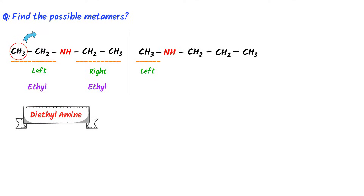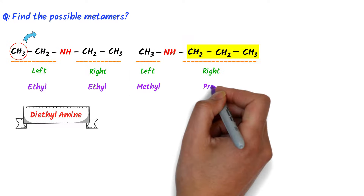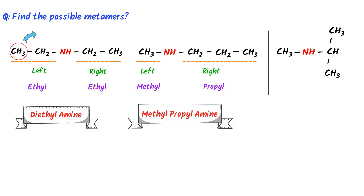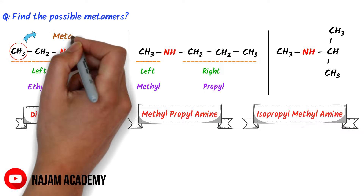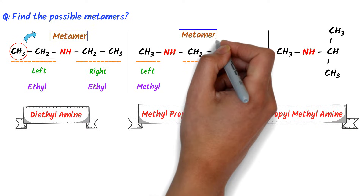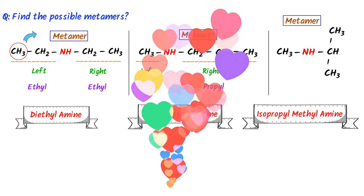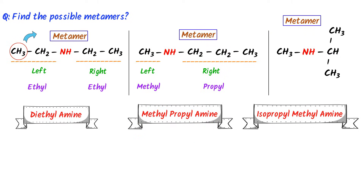The left side of this amine has only one methyl present, while at the right side, there is one propyl. So the name of this amine is methylpropyl amine. Thirdly, I can change the position of this propyl, giving the third metamer of this amine. The name of this amine is isopropylmethylamine. Thus these are the possible metamers of this amine. Remember that metamers arise when different alkyl groups are attached to the same functional group.